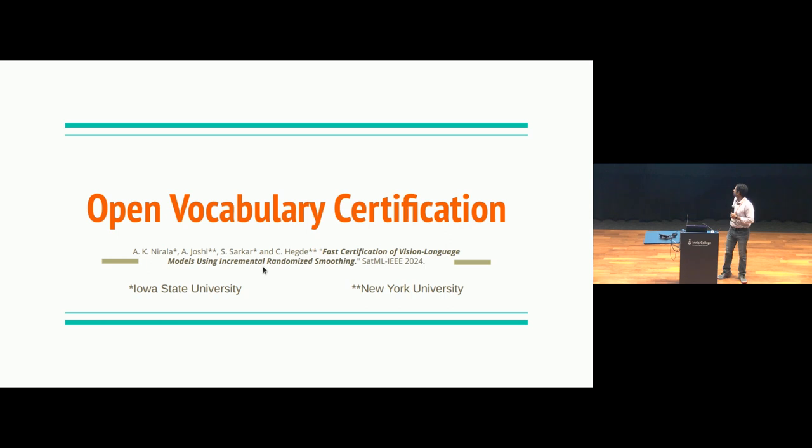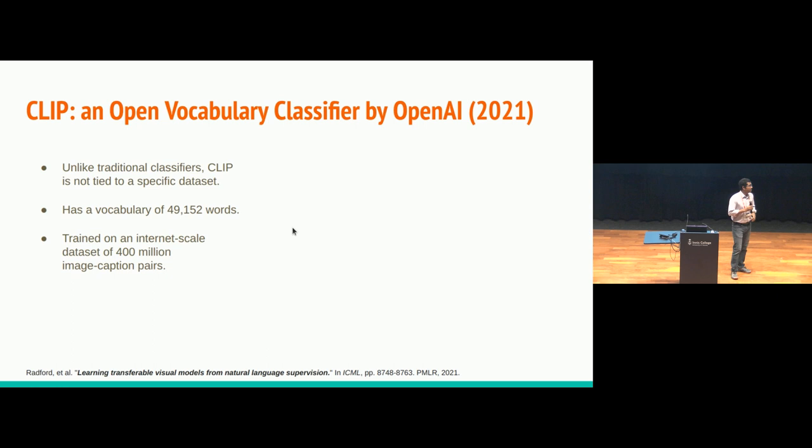So we have developed this method, Open Vocabulary Certification. Let's start by talking about CLIP, which is an Open Vocabulary Classifier by OpenAI. The vocabulary of a traditional classifier is usually limited to the dataset on which it is trained on. For example, if I train a network on ImageNet, then it only has say 1,000 vocabulary. However, CLIP has a vocabulary size of 50,000 approximately, and it achieved this feat because it is trained on internet-scale data.